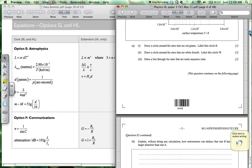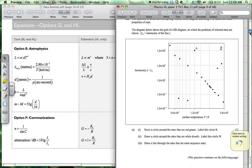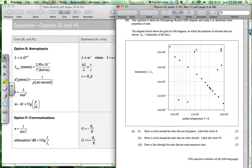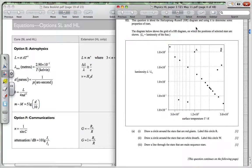So going down to this one now. This is the Hertzsprung-Russell diagram, which is a very important diagram that you need to be able to use. So this question is about the Hertzsprung-Russell diagram and using it to determine some properties of stars. The diagram shows the grid of the HR diagram on which the position of selected stars are shown. Luminosity Ls is the luminosity of the Sun.